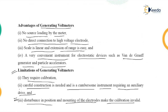In summary, the generating voltmeter uses the generating principle — a variable capacitor driven by a synchronous motor — to measure high DC voltage without direct connection to the source. The next lecture will cover another method of high voltage AC measurement.